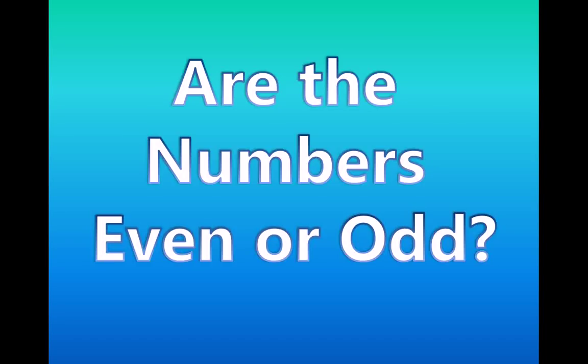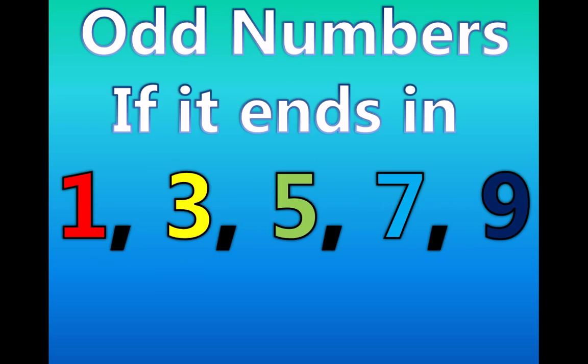Are the numbers even or odd? Odd numbers. If the number ends in a 1, 3, 5, 7, or 9, then the number is odd.